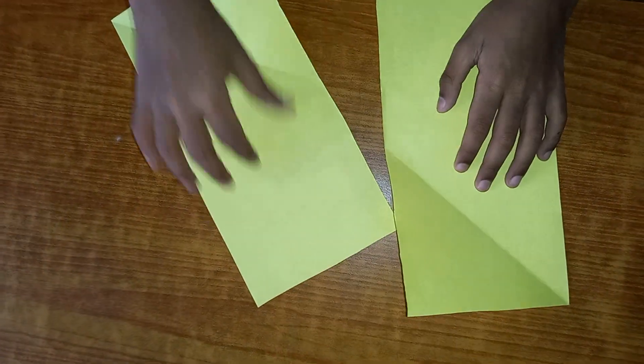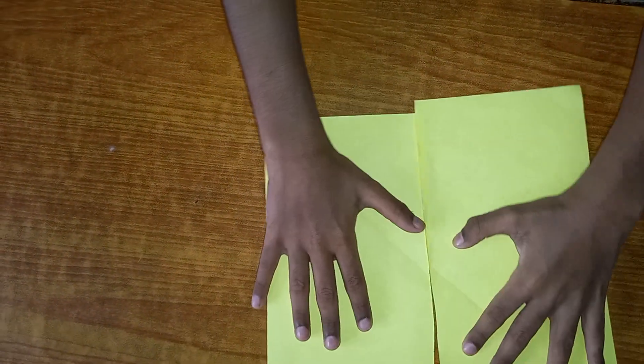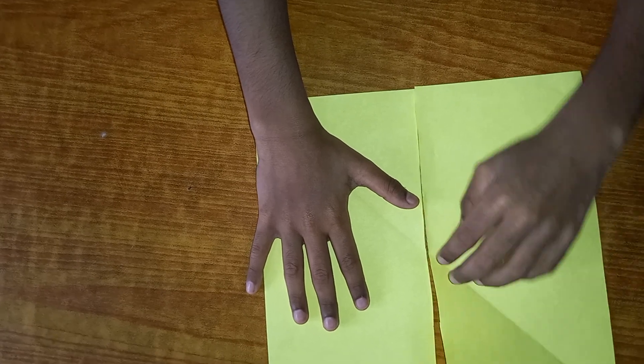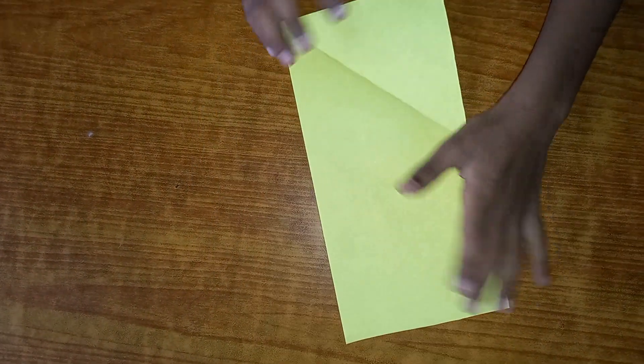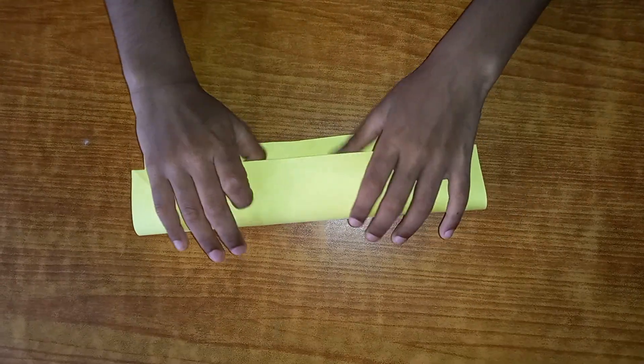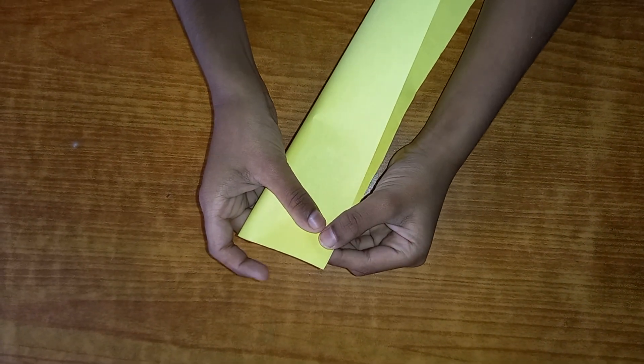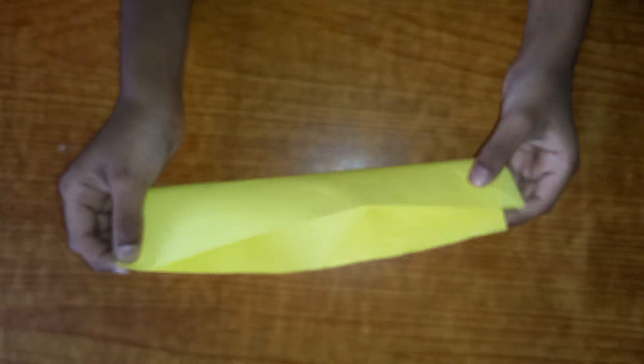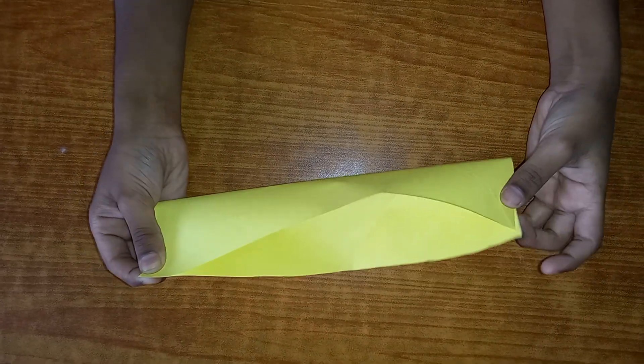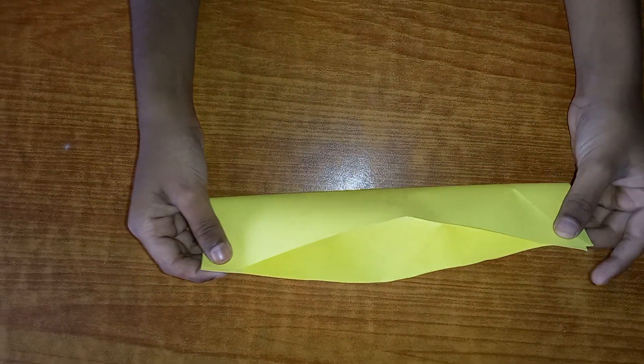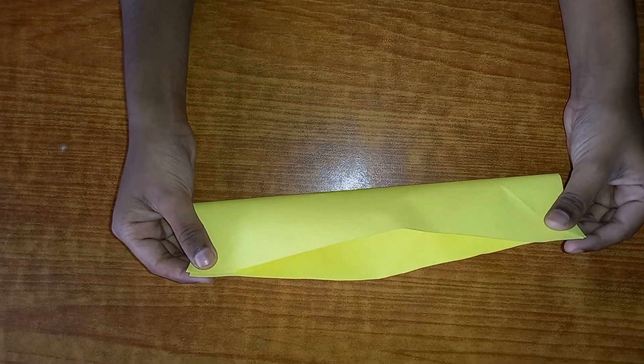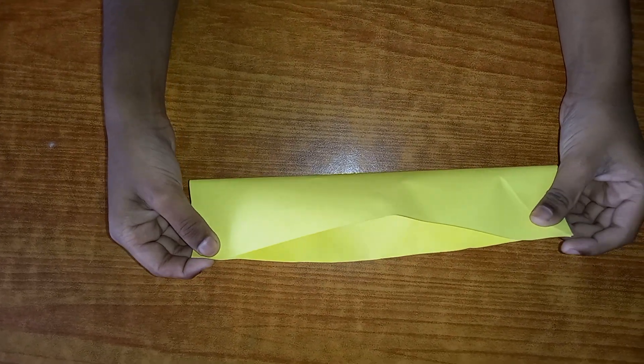Put the scissors aside. Now we get two parts like this, so keep one part aside. What we are going to do now is fold it like this, so you'll get like this.